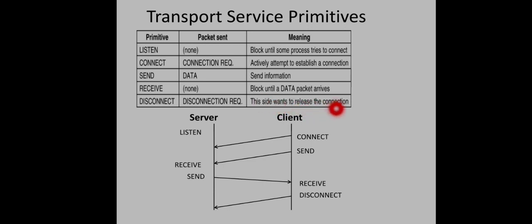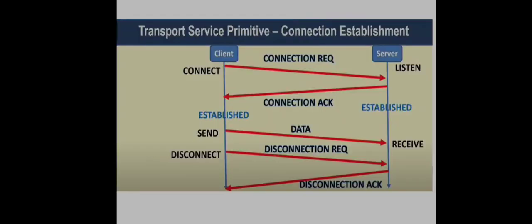The disconnect primitive is sent along with a packet containing information about the connection to be terminated, indicating this side wants to release the connection. Once the server receives the disconnection request, it acknowledges it, terminating the communication. Importantly, data transfer can only occur if there is an active connection — before calling send or receive, an active connection must exist. This is why the transport layer must remember the connection state, making it a stateful connection.